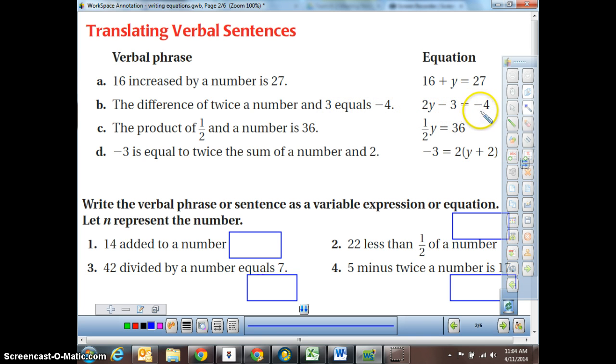It tells us right here equals negative 4. So 2y minus 3 equals a negative 4. We've got the product, that's multiply, of 1 half and a number is 36. So 1 half times a number equals 36. And negative 3 is equal to, so here's the end of our sentence. They put it at the beginning.